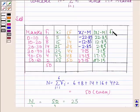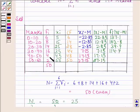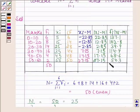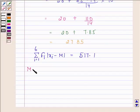Now we will find fi into mod(xi minus M). 6 into 22.85 is 137.15. 8 into 12.85 is 102.8. 14 into 2.85 is 39.9. 16 into 7.15 is 114.4. 4 into 17.15 is 68.6. 2 into 27.15 is 54.3. Adding all of these, summation of fi into mod(xi minus M) equals 517.1.